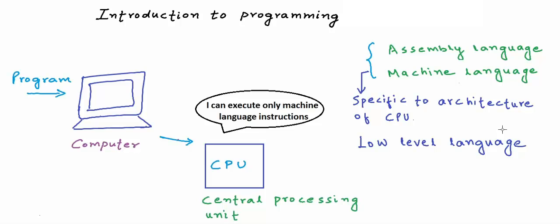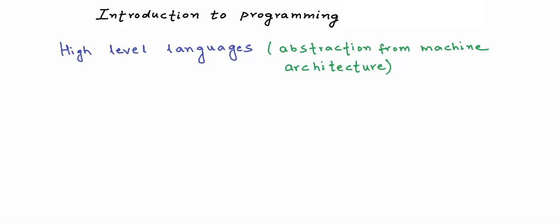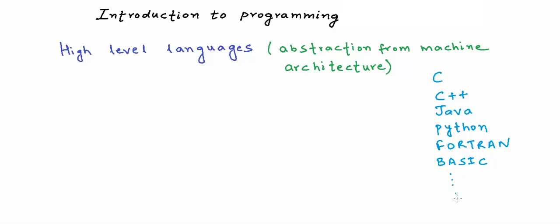There was a need for programming languages that would not be specific to the architecture of the machine. Such programming languages were called high level languages. A high level language is supposed to have more elements of natural language, and it's supposed to make the life of a programmer a lot easier because they will not have to care about all the detailed low-level specifications of the machine. High level languages give you abstraction from machine architecture. Many high level languages have been developed to date — we have C, C++, Java, Python, and a couple of older ones like Fortran and Basic, and the list goes on. Fortran was the first high level language, developed by IBM.